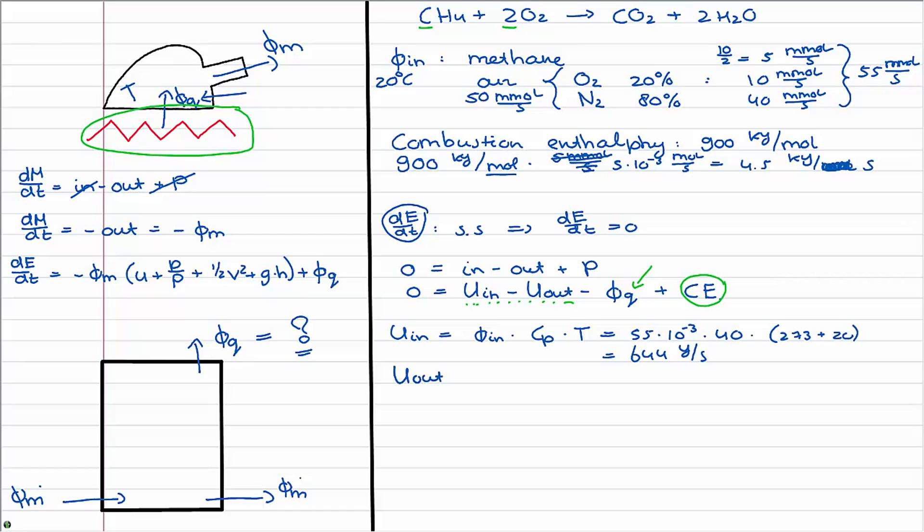You can do the same for U out. Since you are combusting the same amount of molecules as you are getting out, the outflow of molecules, the amount is exactly the same: 55 times 10 to the power of minus 3. The CP is also exactly the same. And the temperature is different since the outflow gases were 120 degrees Celsius. And remember you need to do this in Kelvin, so therefore we are using 273 plus 120. And what you get out is 865 joules per second. These two answers were also asked in the exercise.